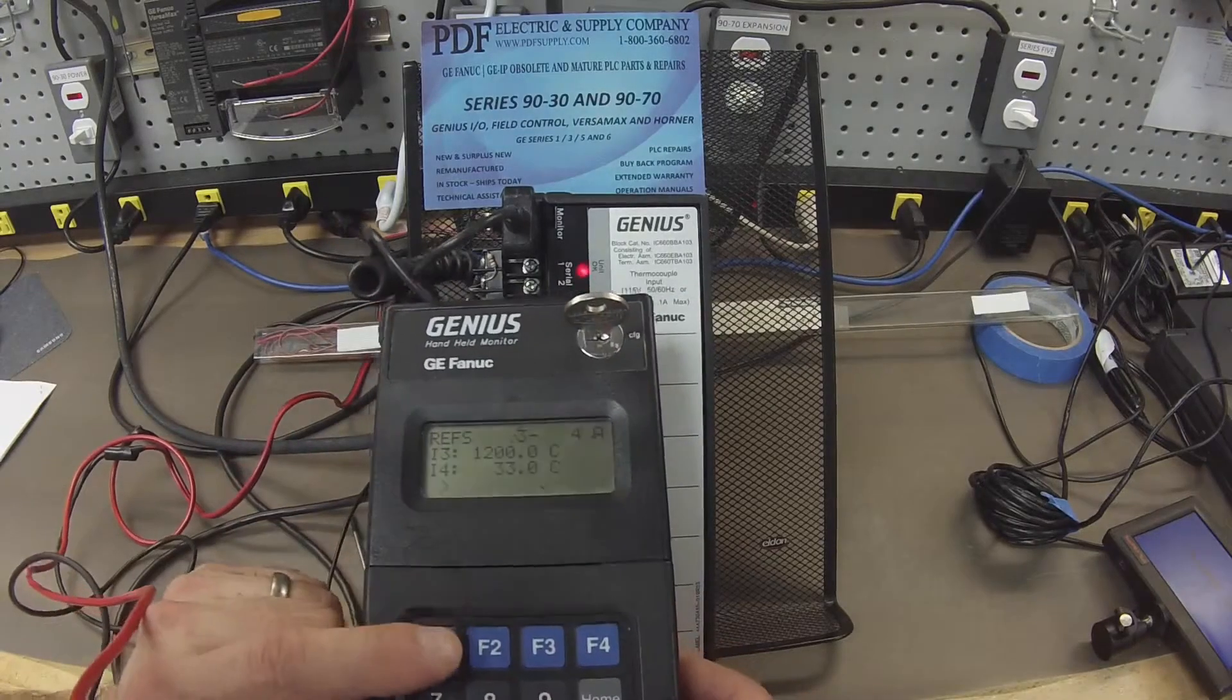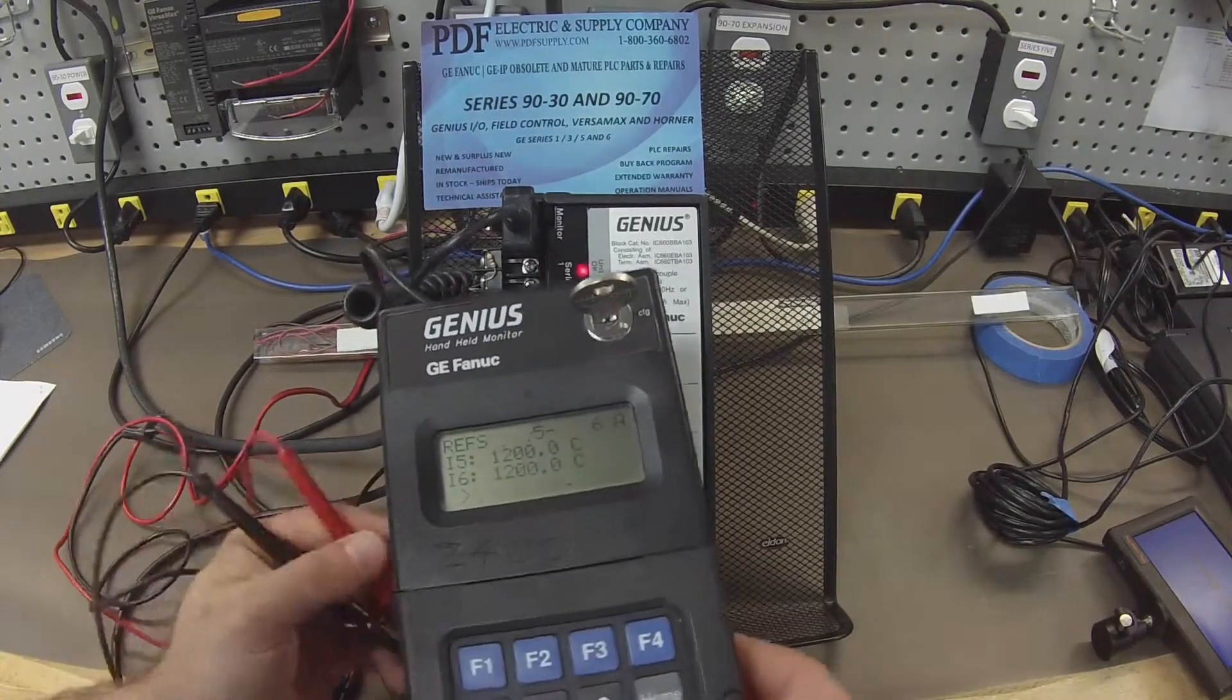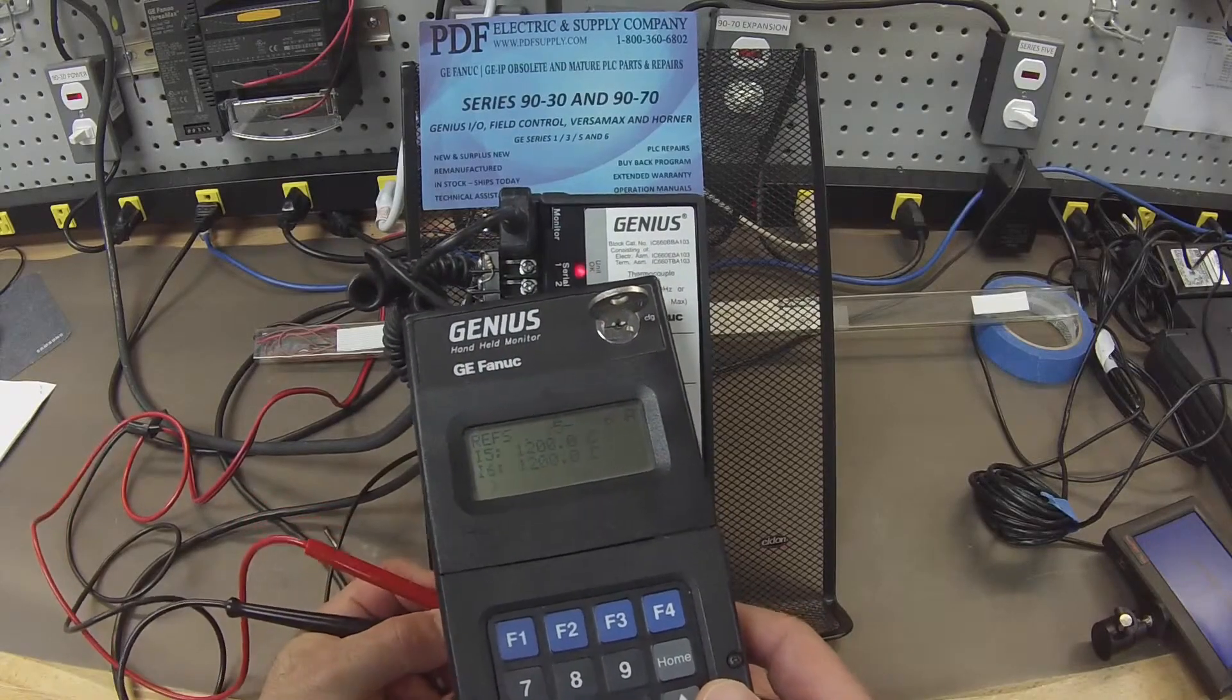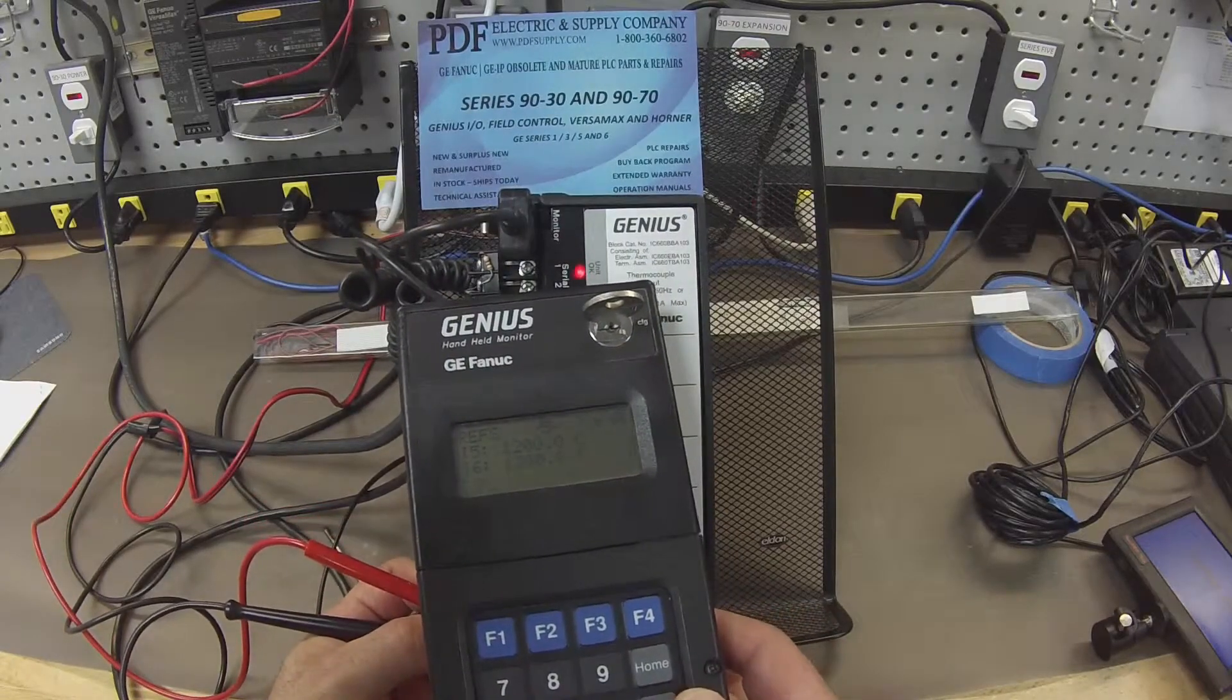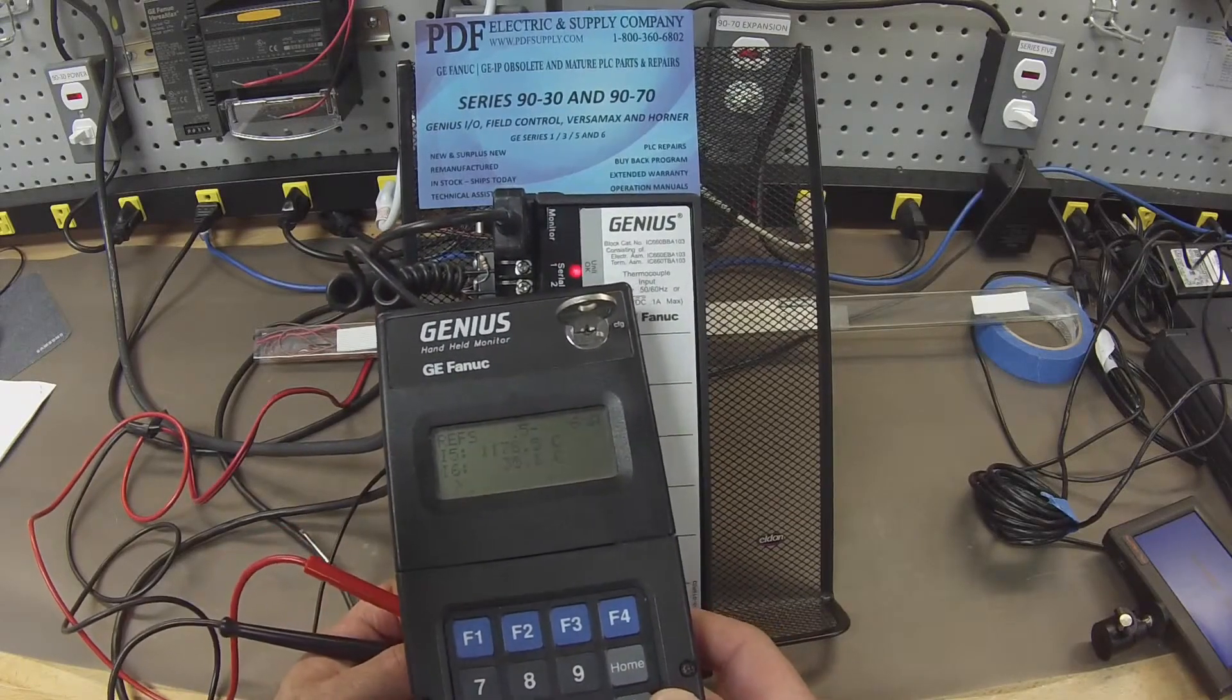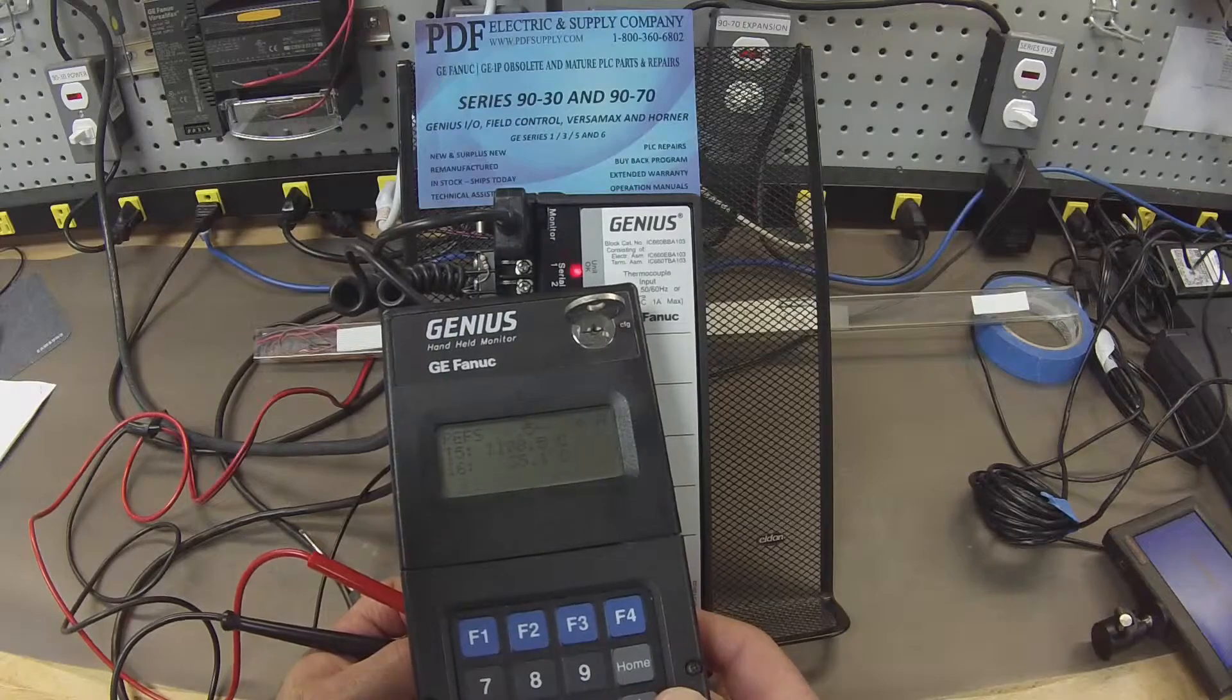I'm going to toggle one more time, F1, to get to channels 5 and 6. Channel 5, I'm using terminals 29 and 30. And channel 6, I'm using terminals 31 and 32.